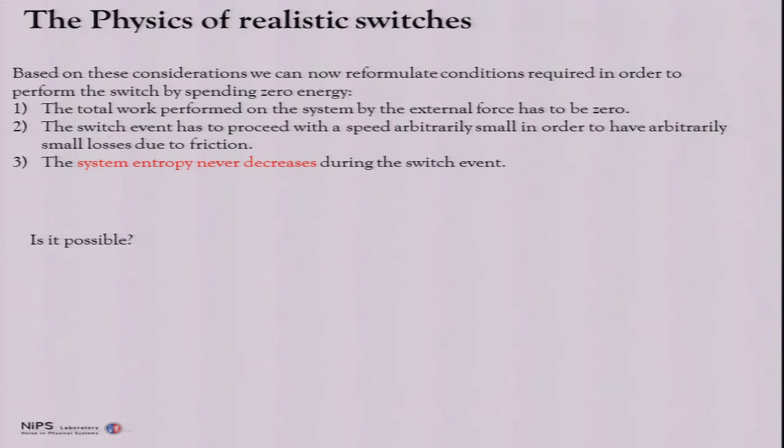So, based on this consideration, we can now reformulate the conditions required in order to perform the switch by spending zero energy, meaning zero external work. First, the total work performed on the system by the external forces has to be zero. Second, the switch event has to proceed with the speed arbitrarily small in order to have arbitrarily small losses due to friction. I didn't mention this before, but in the equation of motion, you see, there was also a friction term. So, you don't know which was proportional to the speed in that case. And in order to keep that force small, you need to keep the speed very small. Third, the system entropy never decreases during the switch event. So, we have to take into account also the third condition.